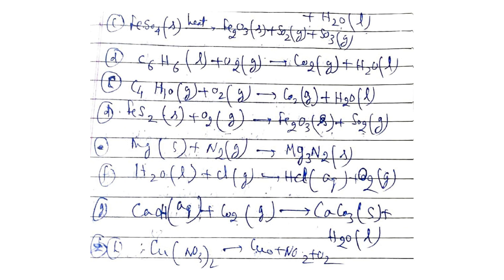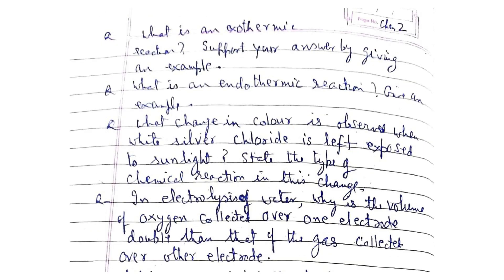What is an exothermic reaction? Support your answer by giving one example. What is an endothermic reaction? Give an example. Then, what change in color is observed when white silver chloride is left exposed to sunlight? State the type of chemical reaction in this change.